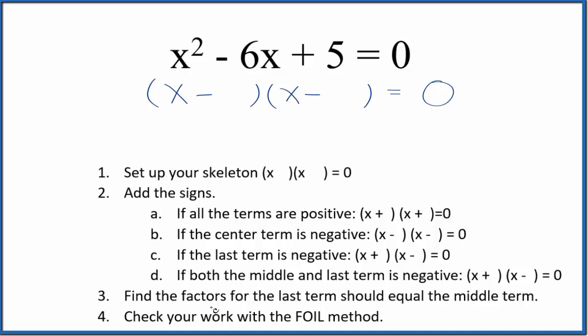Our next step is to look at the factors for the last term, that's the 5 here, and see if they should equal the middle term. So we could say for 5, 1 times 5, that would give us 5. That's really the only factor. So we just put a 1 and a 5 here, and we should be set.